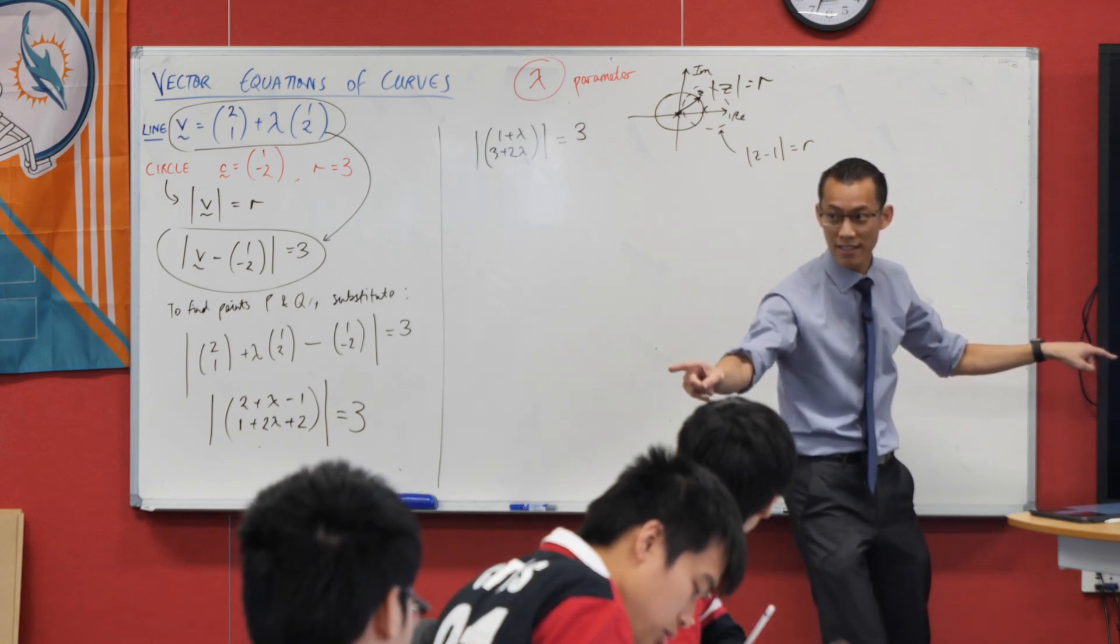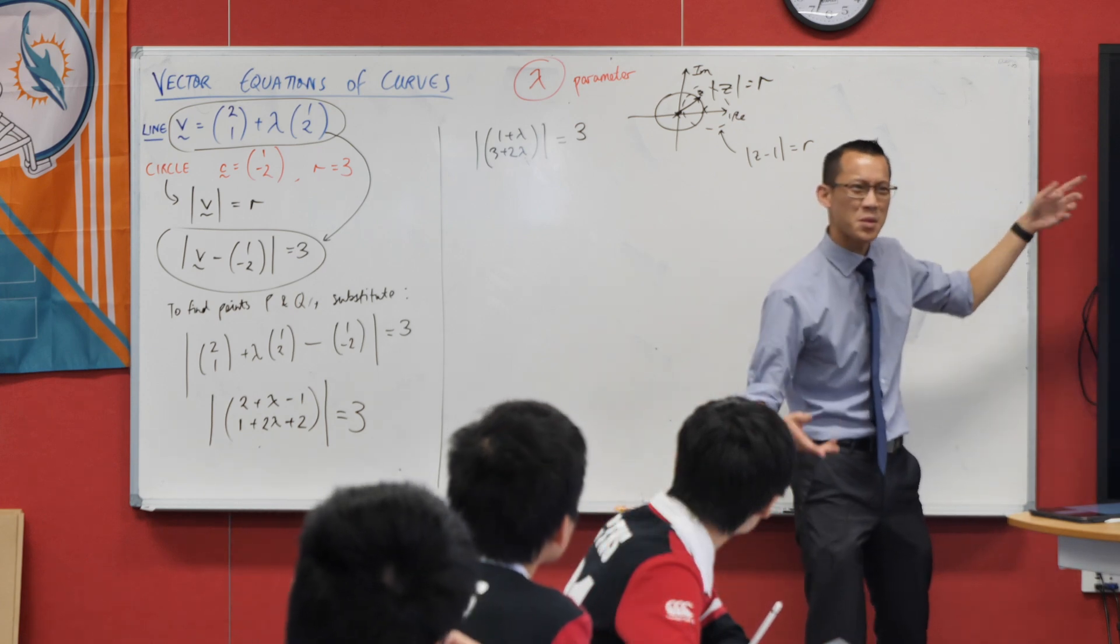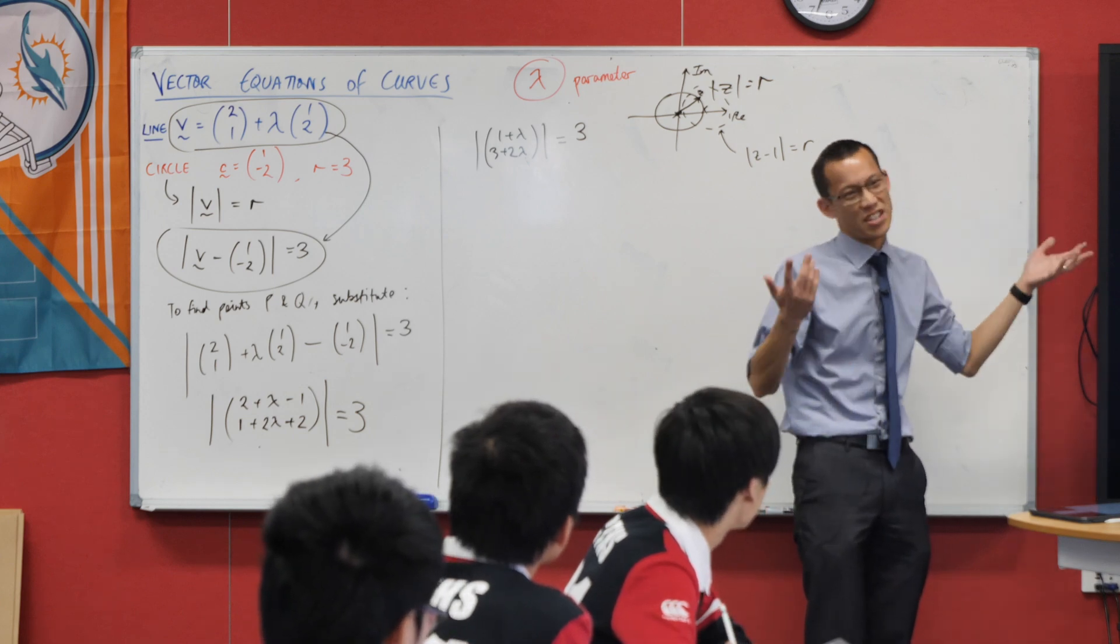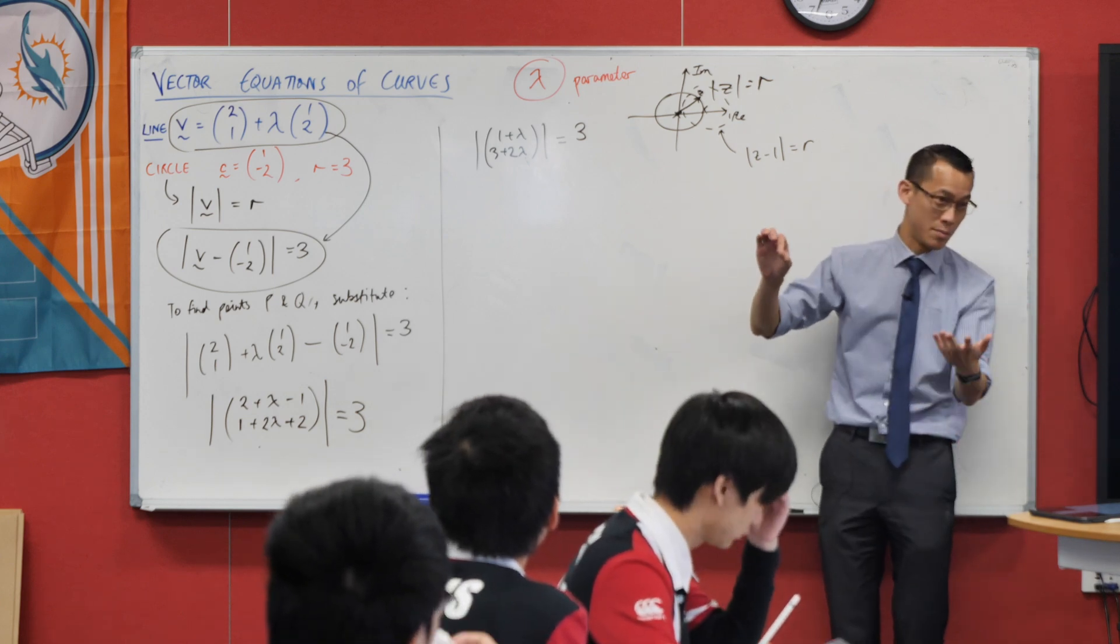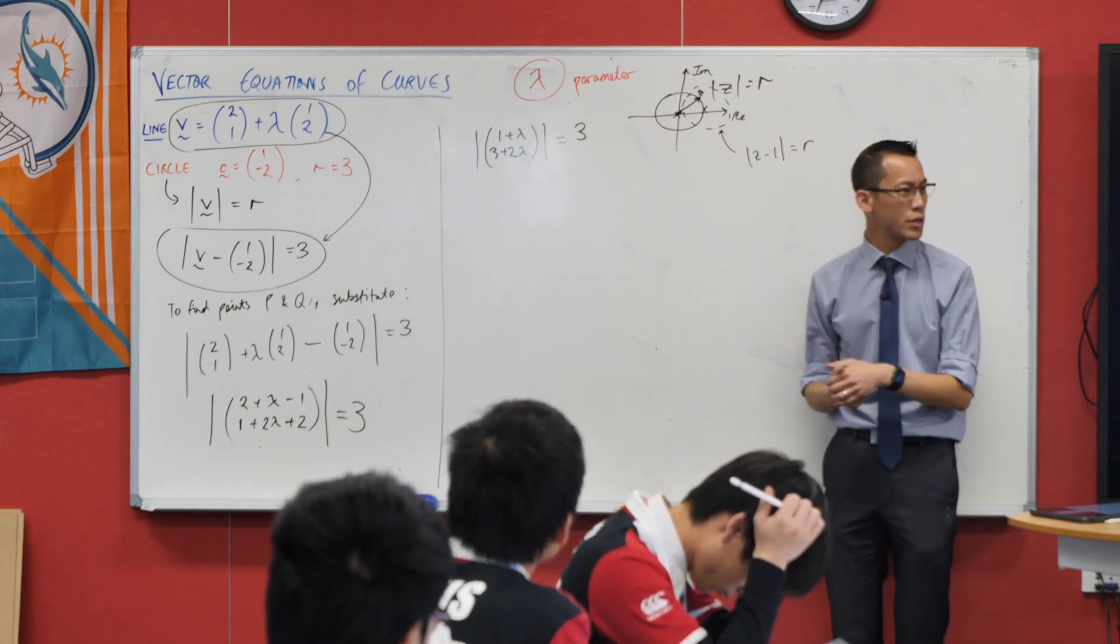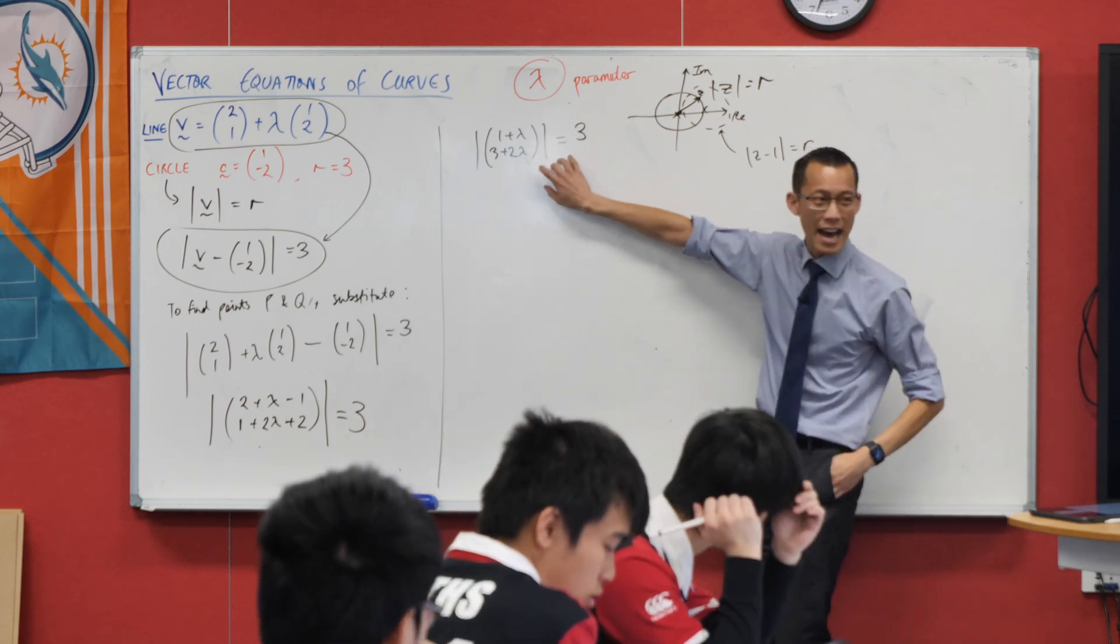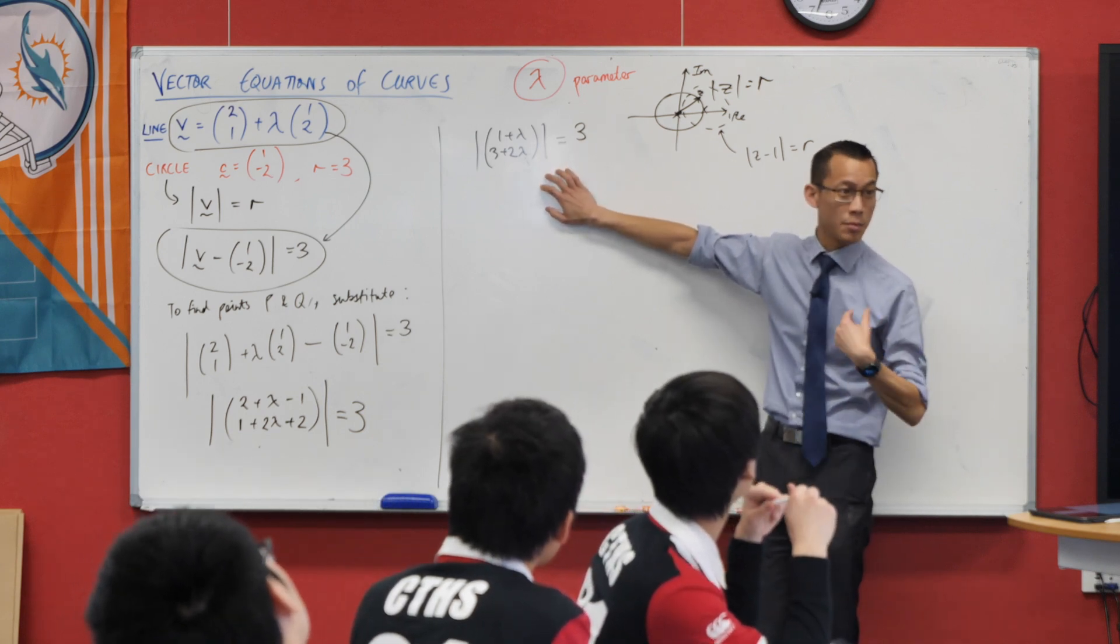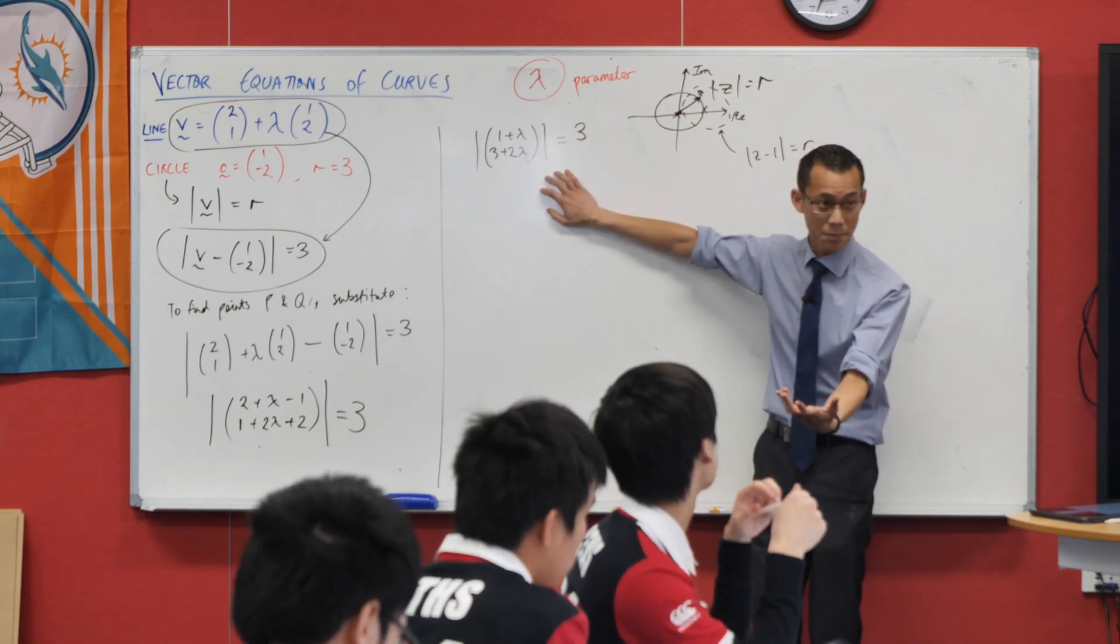Xiao, does this answer your question now? Does it matter which one's P and which one's Q? No, it doesn't. Especially because I'm after just the midpoint, which is between them anyway. So therefore, I need to find out what the appropriate lambdas are. So I kind of need to get out of this weird looking equation into something I can solve for lambda.